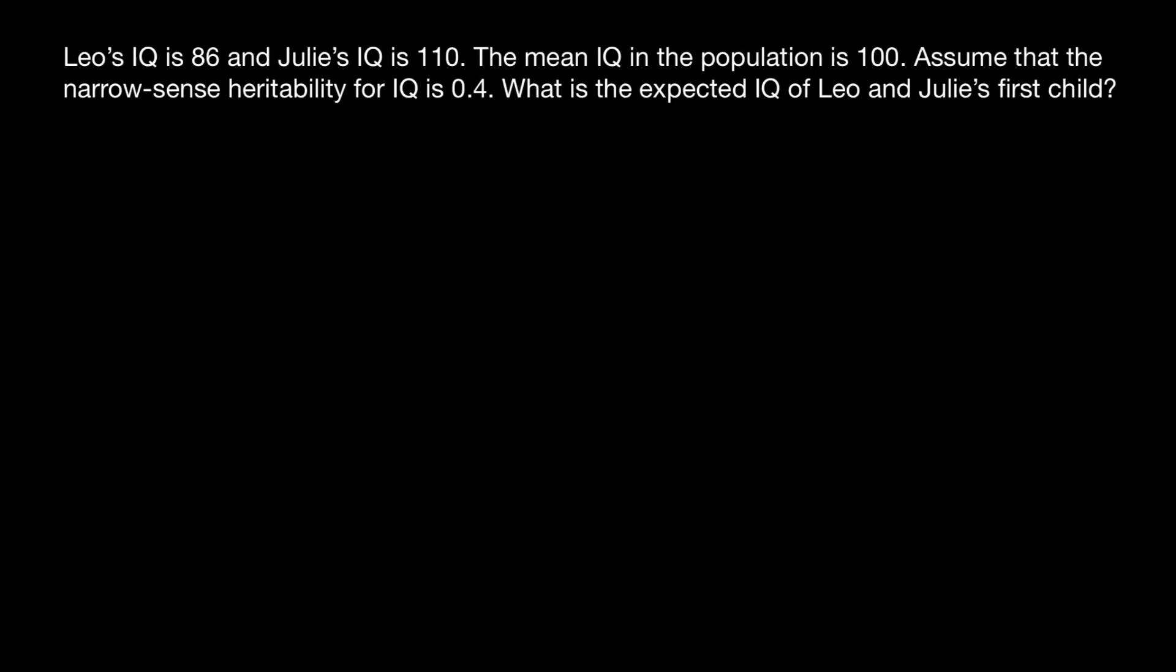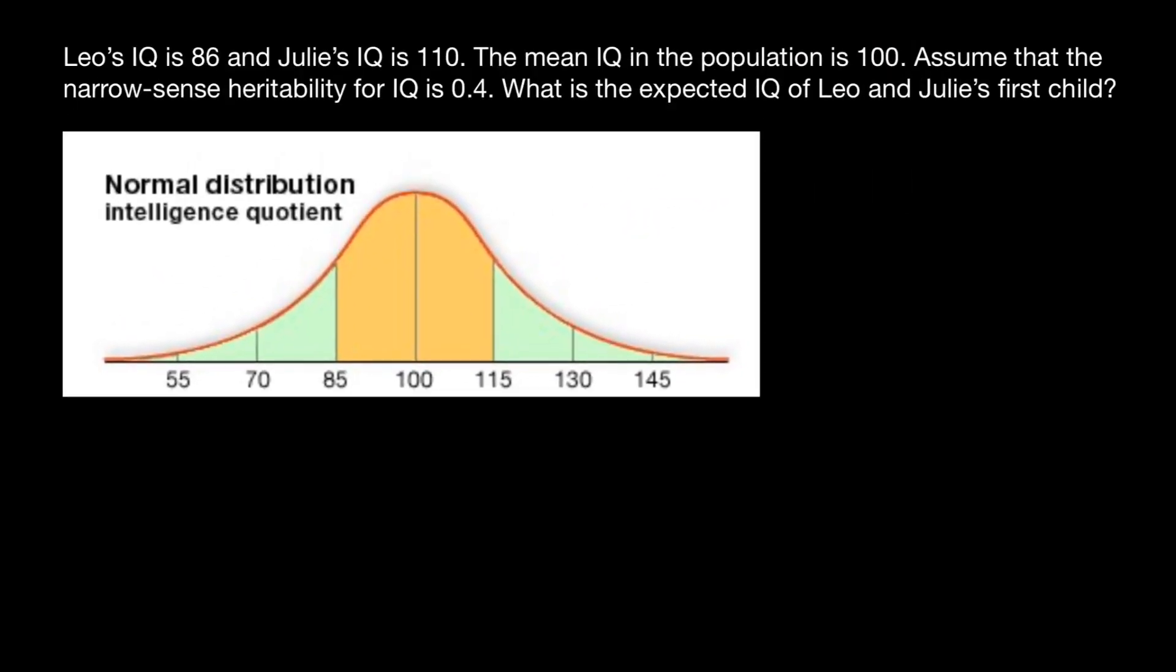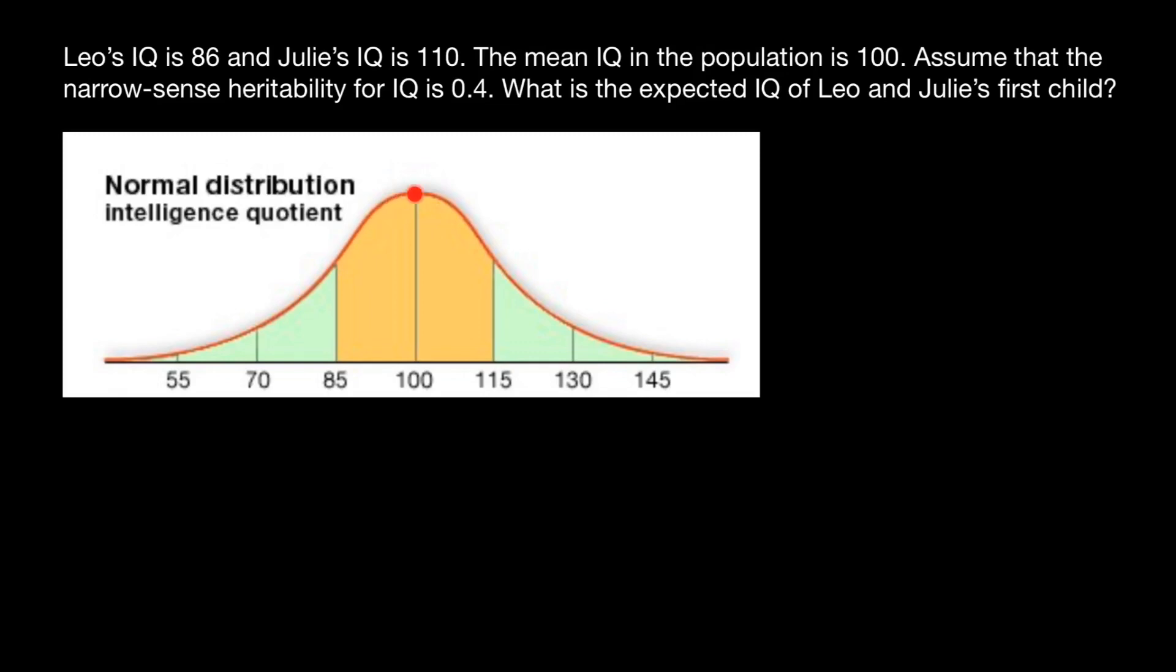What is the expected IQ of Leo and Julie's first child? This table represents a distribution of IQ in a general population, which we also call base population. Very few people are very stupid and very few are very smart or genius. Most people we can find around the mean of this population, which is 100.